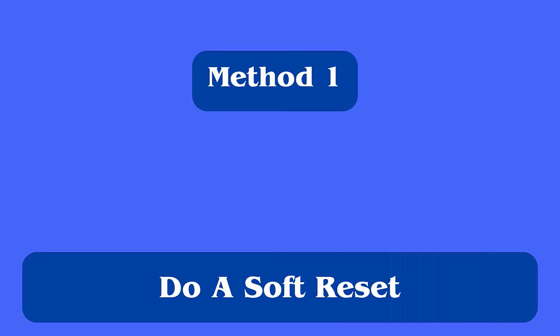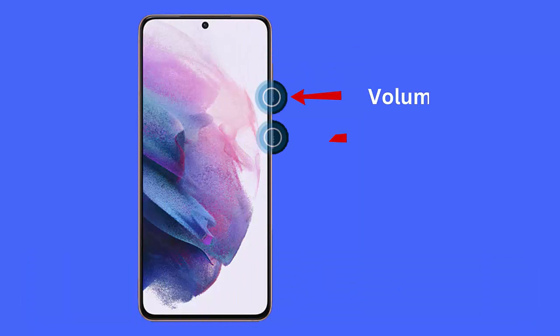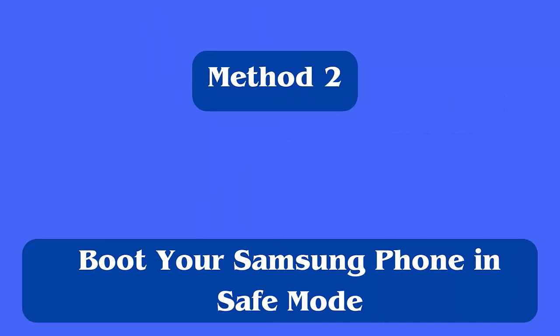Method one: do a soft reset. The first trick suggested is to soft reset your device. Hold down the power plus volume down buttons together until the screen goes completely black. Continue to hold both buttons until the power menu appears, then release them. Wait for the screen to go off, then after a few seconds the phone should restart displaying the Samsung logo as it boots up.